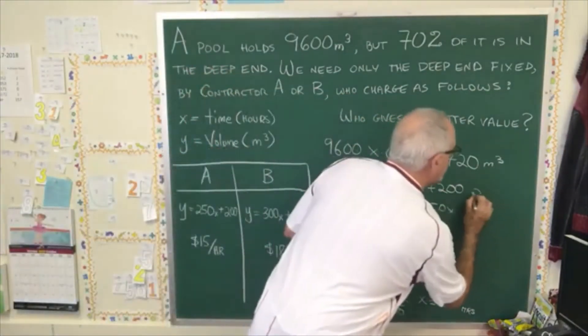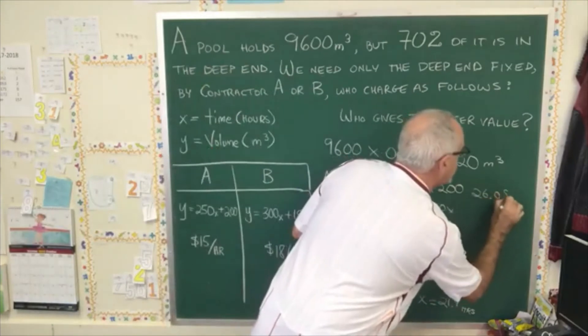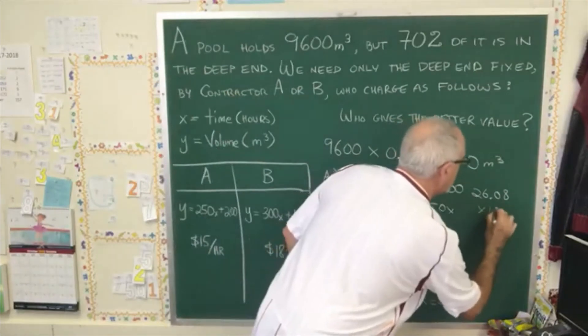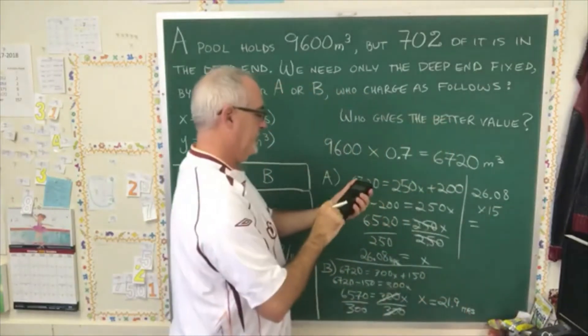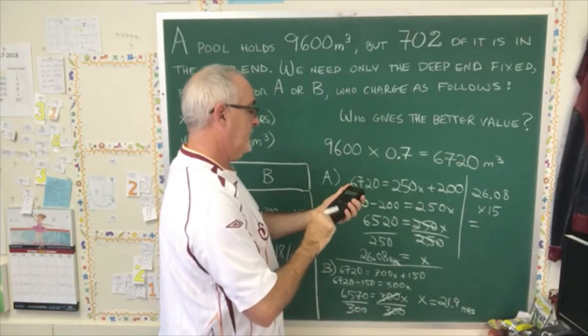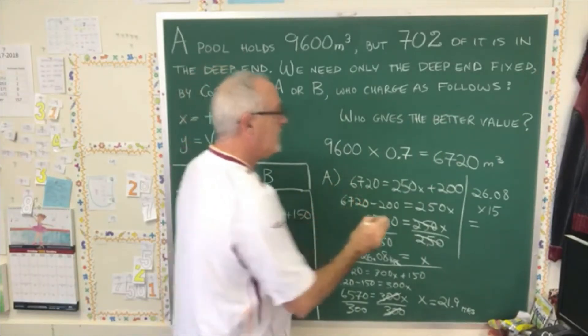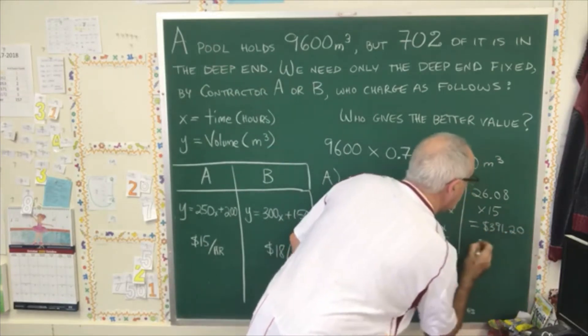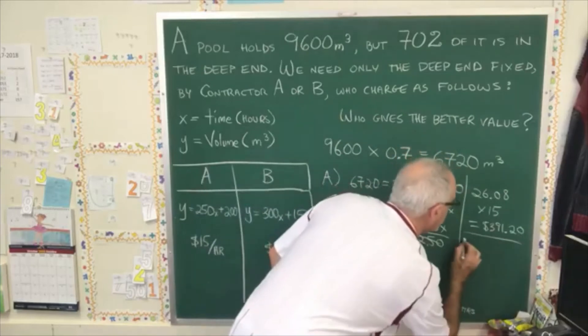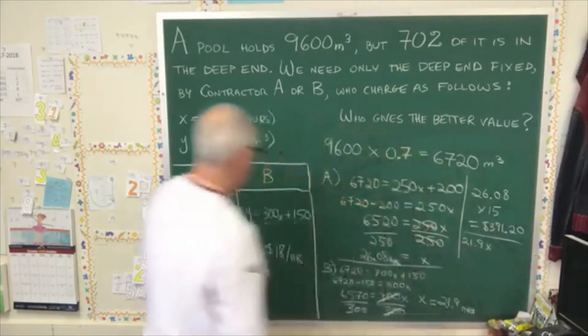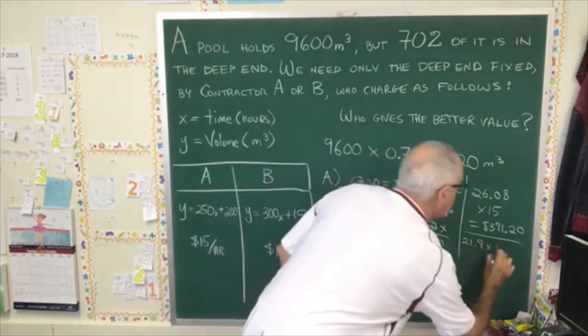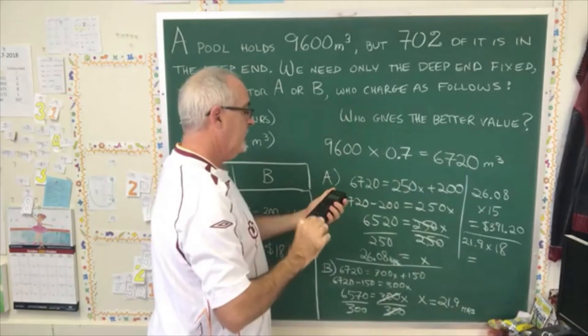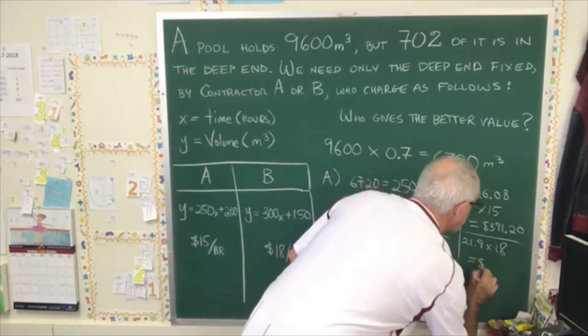For A, 26.08 is being multiplied by 15, and it's $391.20. For B, 21.9 is being multiplied by $18 an hour, which gives us $394.20. It's close.